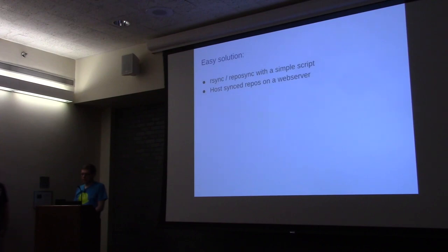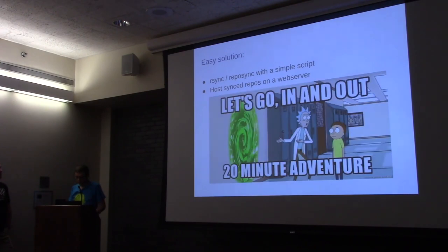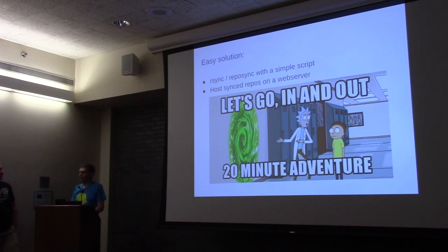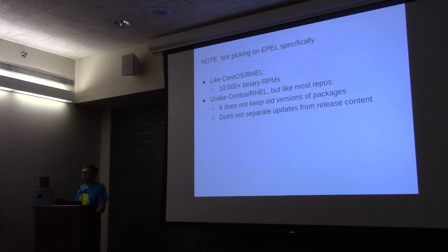You might think the easiest solution is to just call rsync or reposync for each repo with a simple bash script. Once you have those files on disk — RPM files and metadata in the original directory structure — you post them on a web server. Seems simple, right? But for EPEL specifically, there are over 10,000 binary RPM packages, it's very large in gigabytes, and unlike CentOS and RHEL, it does not keep old versions of packages.